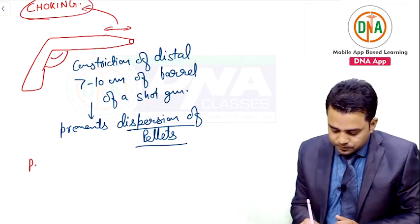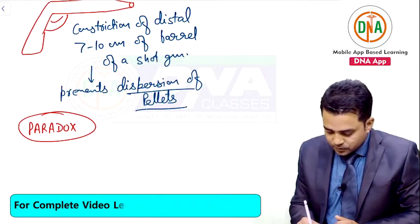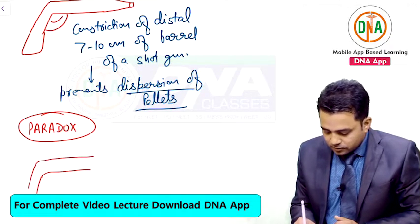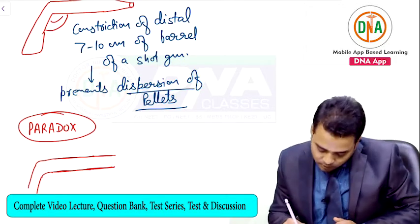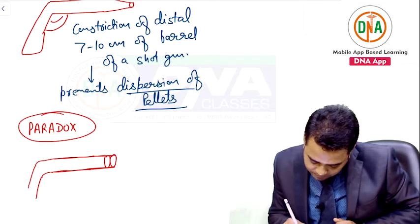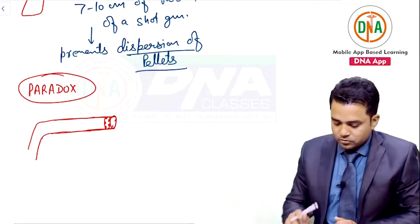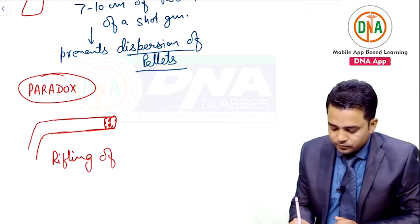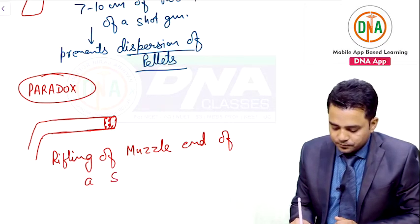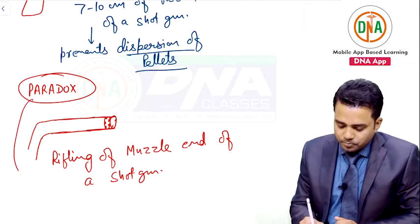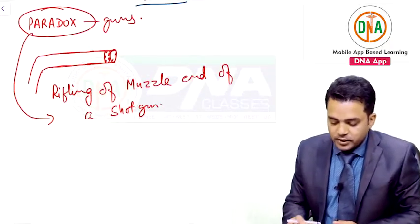Another term is paradox guns. In a shotgun, everything is smooth from inside, but in paradox guns, companies rifle the muzzle end of the shotgun. So a shotgun with rifling at the muzzle end is called a paradox gun.